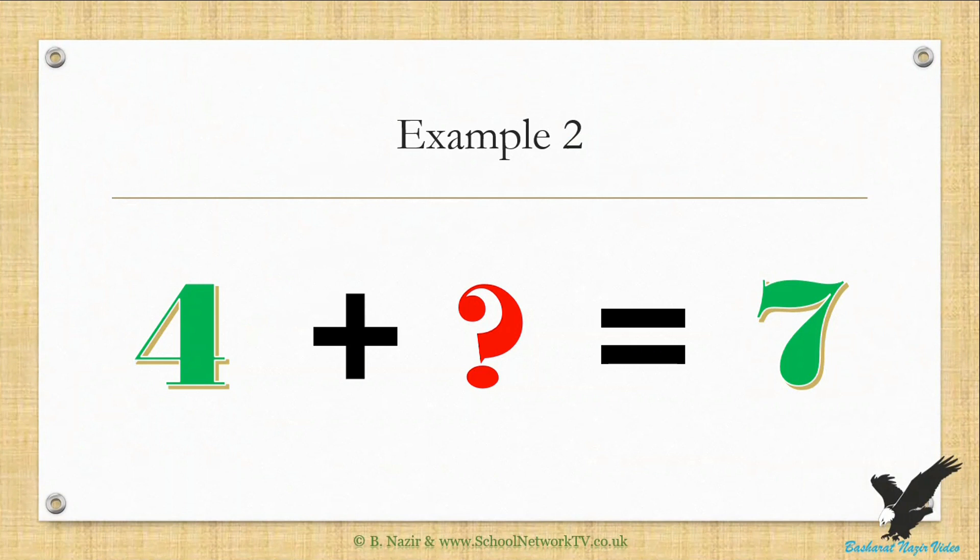There is no balance on both sides. To make both sides equal we need to add 3 to the left side. The answer is 3.